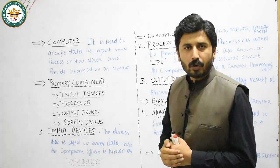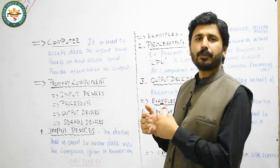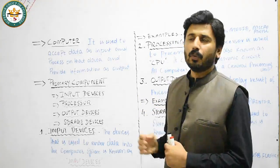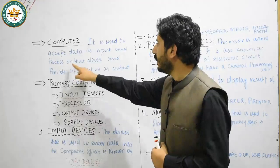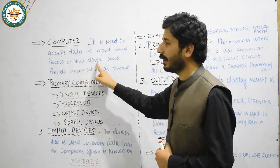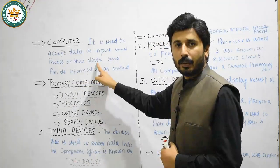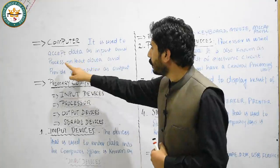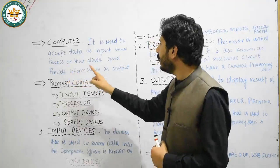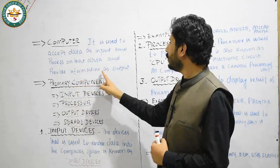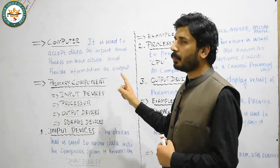After accepting the data as input, the computer system processor will process on that data. The processor processes this data and provides information as output.